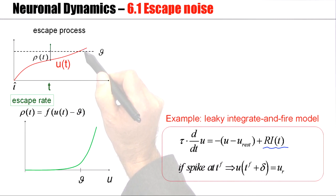This stochastic intensity or escape rate will depend on the difference between the momentary value of the membrane potential and the threshold.